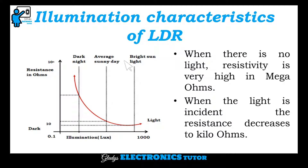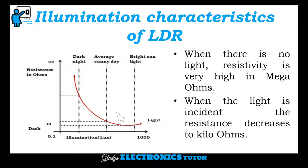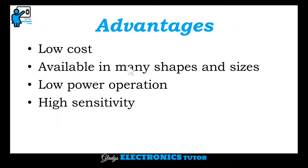This is the illumination characteristics of LDR. When there is no light or when it is dark, the resistivity is very high in mega ohms. When the light is incident, the resistance decreases to kilo ohms.